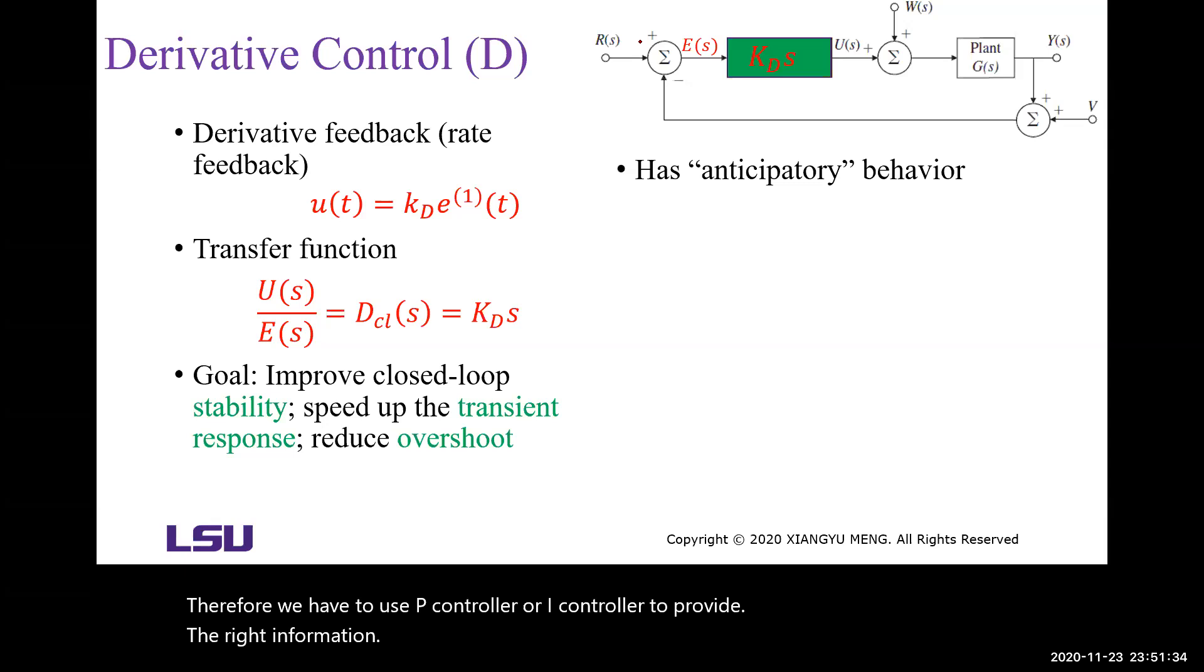The D controller has anticipatory behavior. It means it has the ability to predict the future. Because the D controller is proportional to the rate of change of the signal, it can predict the trend of the signal.